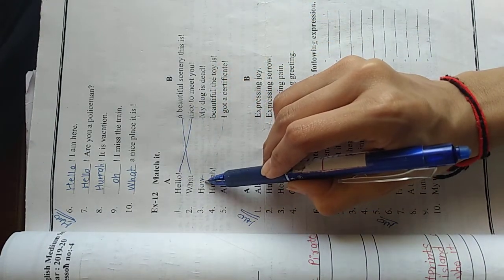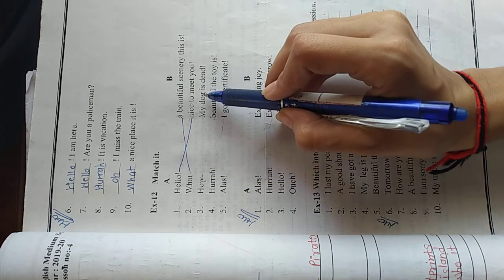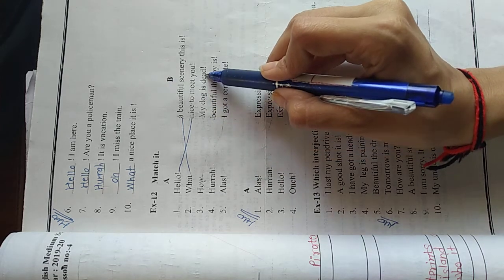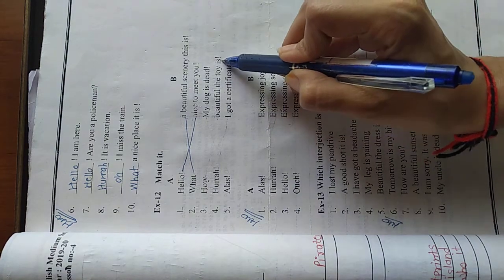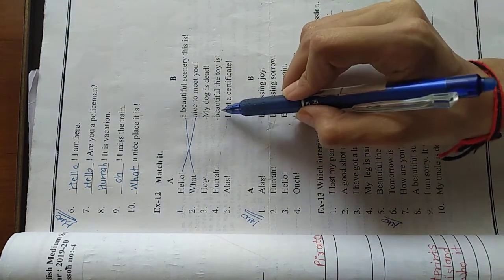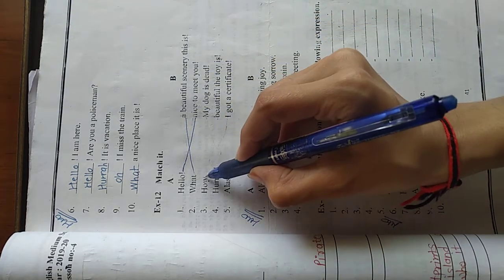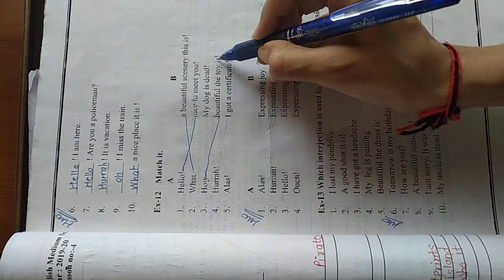How. How describes the things. Now look at the sentence. Which sentence is describing the thing? My dog is dead. Beautiful the toy is. I got a certificate. In this, beautiful the toy is describing. So match how beautiful the toy is.